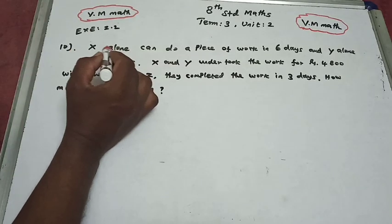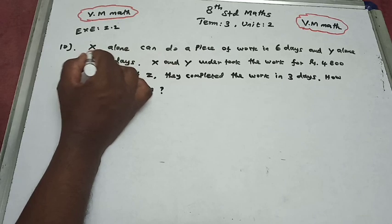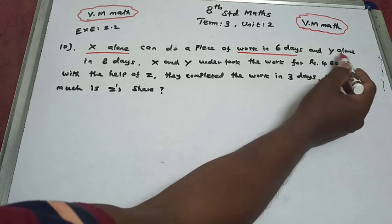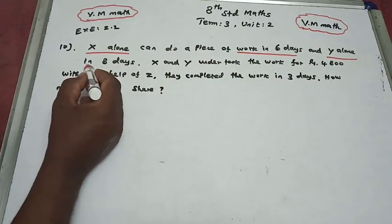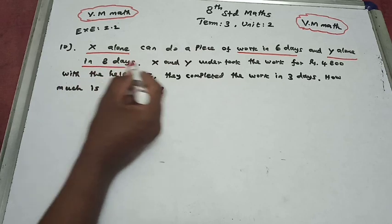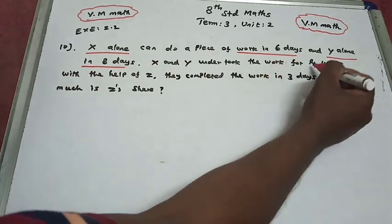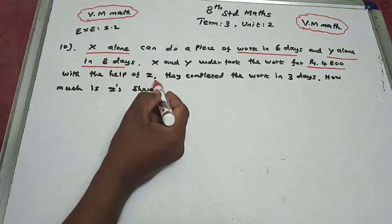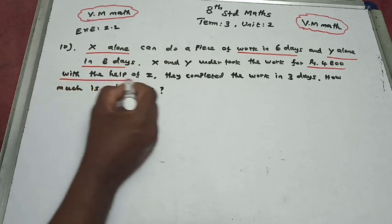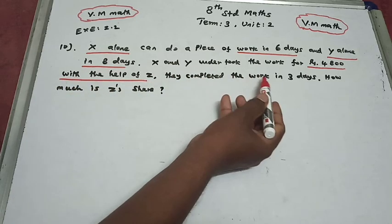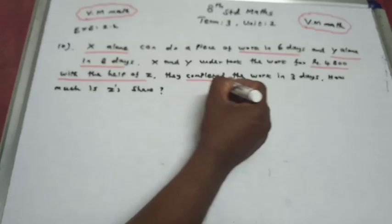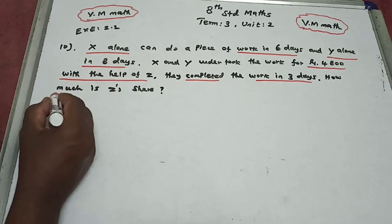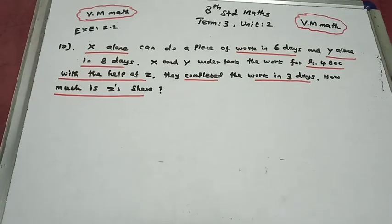Exercise 2.2, question number 10. X alone can do a piece of work in 6 days and Y alone in 8 days. X and Y undertake the work for ₹4,800. With the help of Z, they complete the work in 3 days. How much is Z's share?